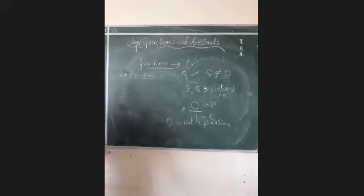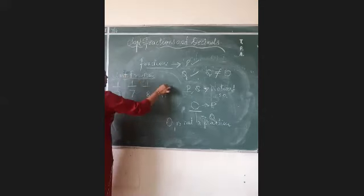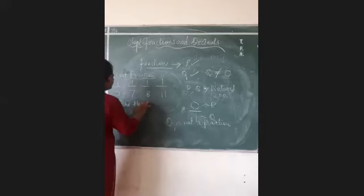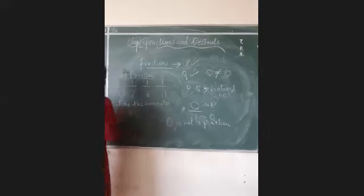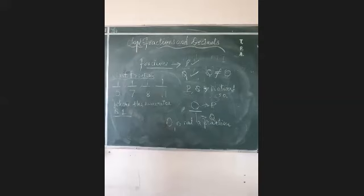Now we are discussing about unit fraction. Unit fraction, whenever you take one part of whole, only one part of whole, it means you are talking about unit fraction. For example, 1 by 5, 1 by 7, 1 by 8, 1 by 11. These all are unit fractions examples, where the numerator is 1. Or in another language you can also say this like when you take one part of any whole, then it means you are talking about unit fraction.